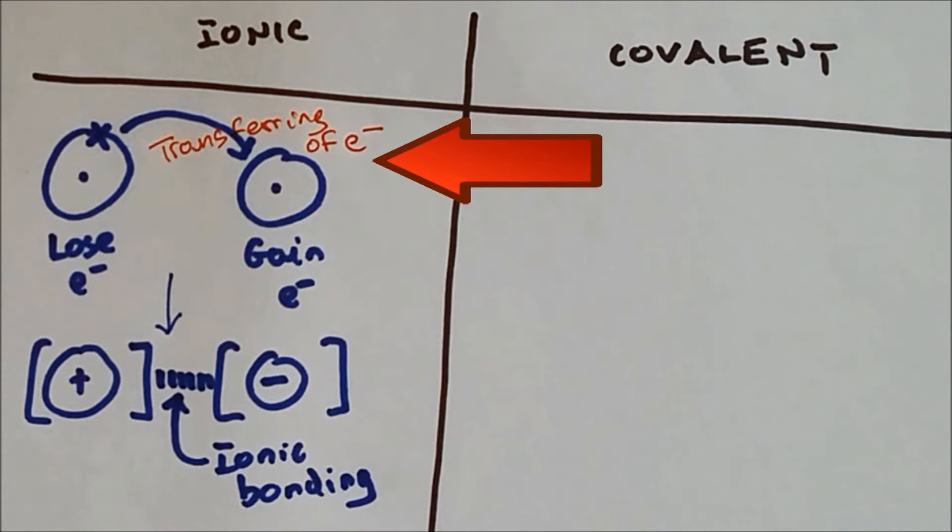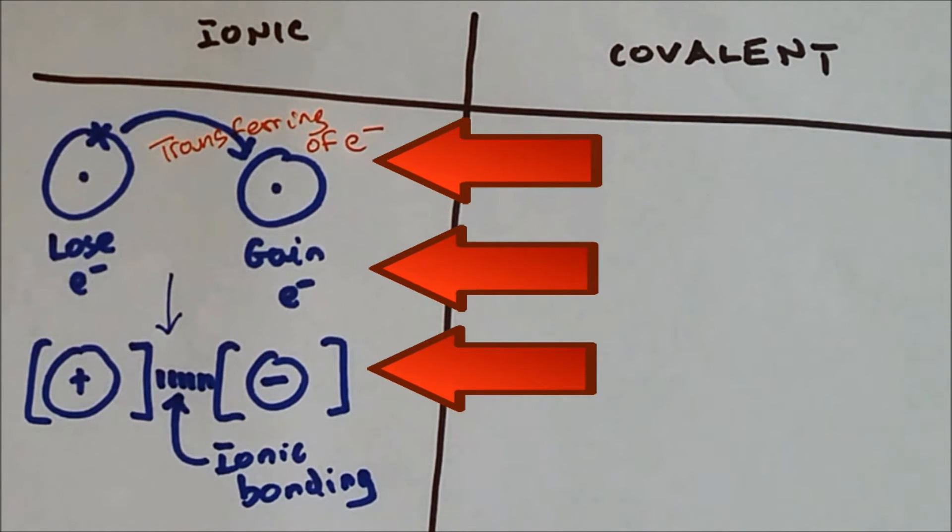So in ionic bonding there is transferring of electrons. So one atom loses electrons and the other atoms gain electrons. And this leads to the formation of ions, one positive charge and the other one negative charge, and opposite charges have attraction.